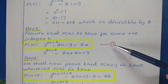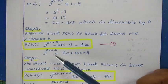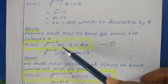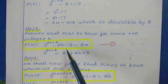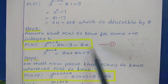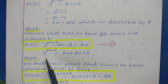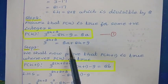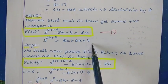For later use, I will take the value of 3 to the power 2k plus 2. Moving minus 8k and minus 9 to the other side so that they become positive, we have: 3 to the power 2k plus 2 is equal to 8a plus 8k plus 9.